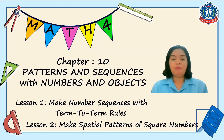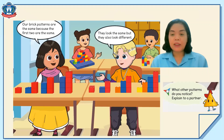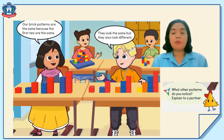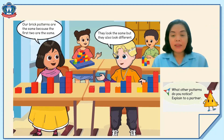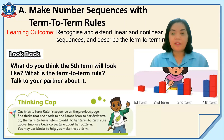Okay, come on, let's start. I have here a picture. Take a look. Look at the two children in front — they have some brick patterns. The girl said that their brick patterns are the same because the first two are the same. But the boy said that they look the same but also look different. What have you noticed? Are both the girl and boy correct? Please explain that during our class. Now let's start with the first lesson.